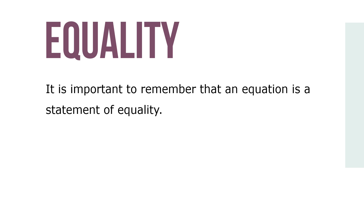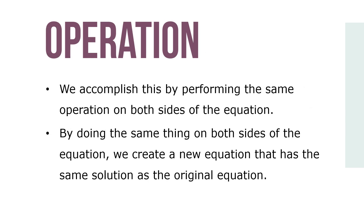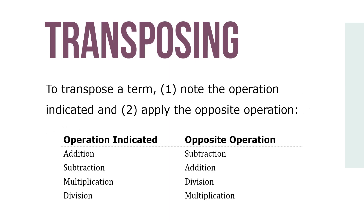It is important to remember that an equation is a statement of equality. To solve the equation, we must move or transpose all the unknowns to one side and all the knowns to the other. We accomplish this by performing the same operation on both sides of the equation. By doing the same thing on both sides of the equation, we create a new equation that has the same solution as the original. It's customary for the unknowns to be on the left side and the knowns to be on the right side, such as x equals 7.